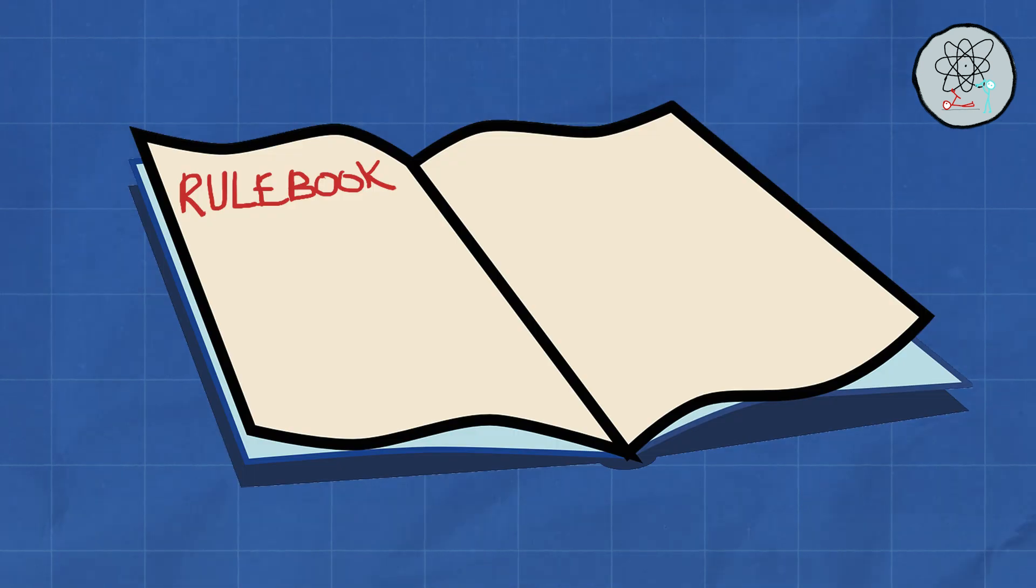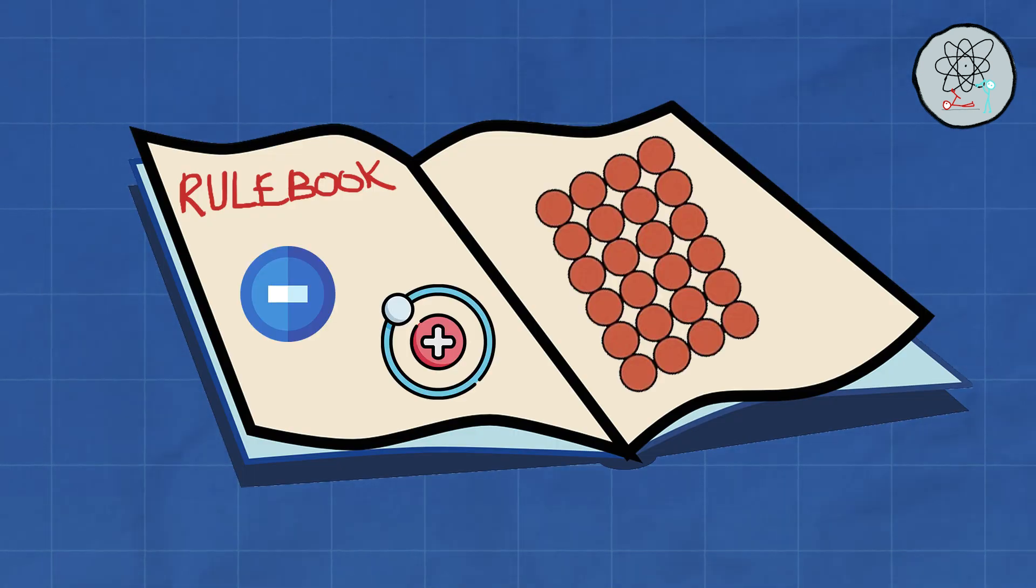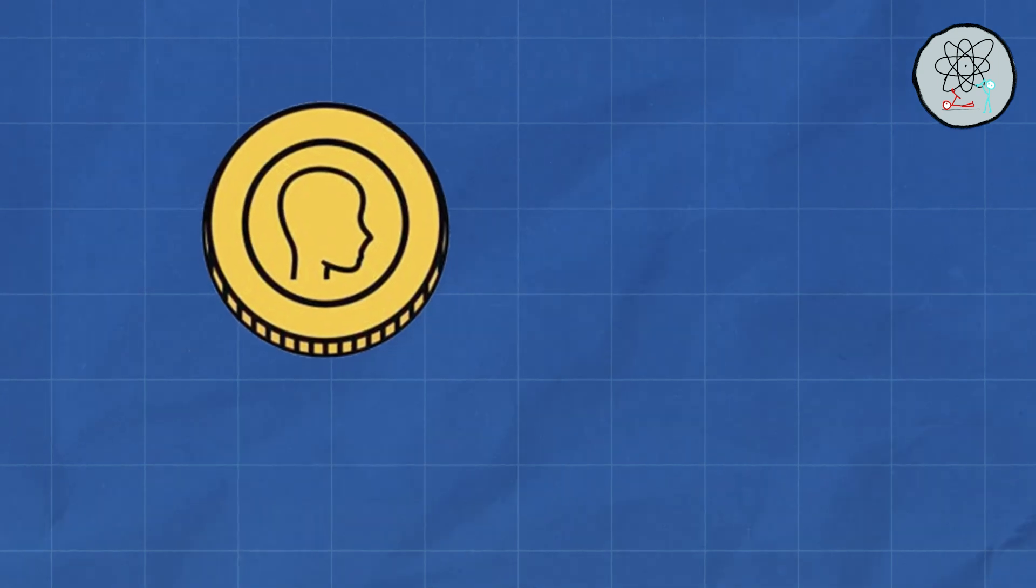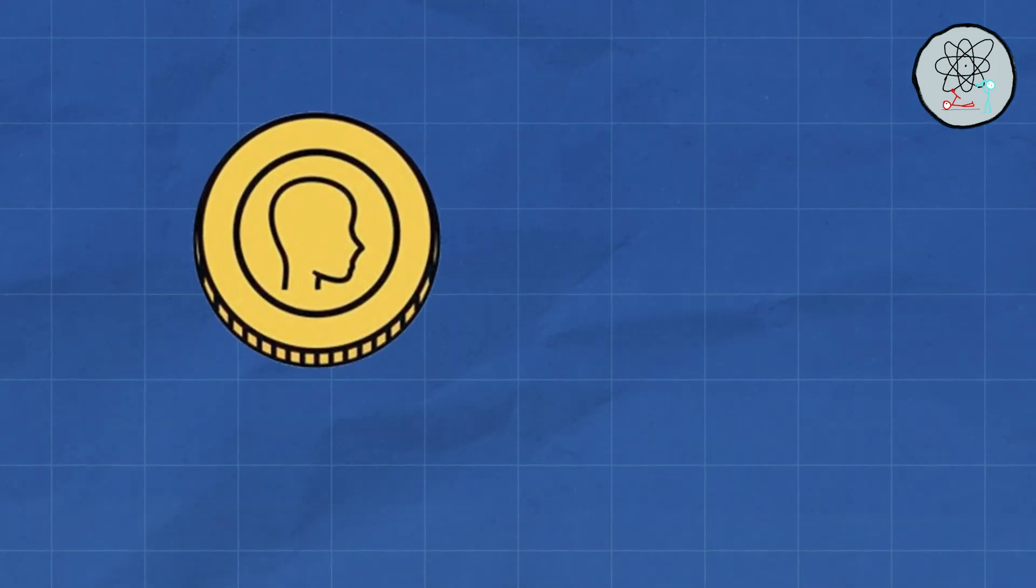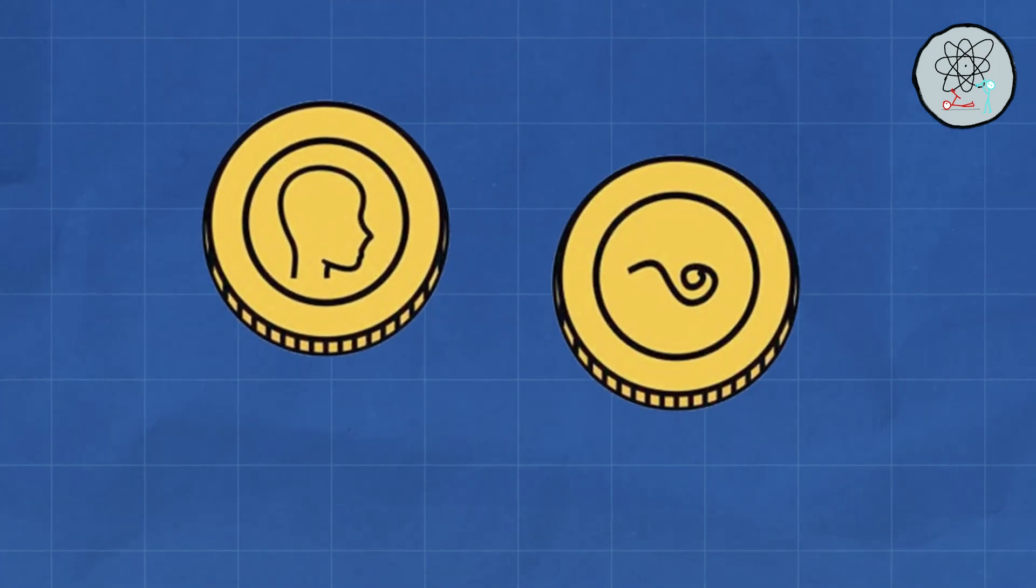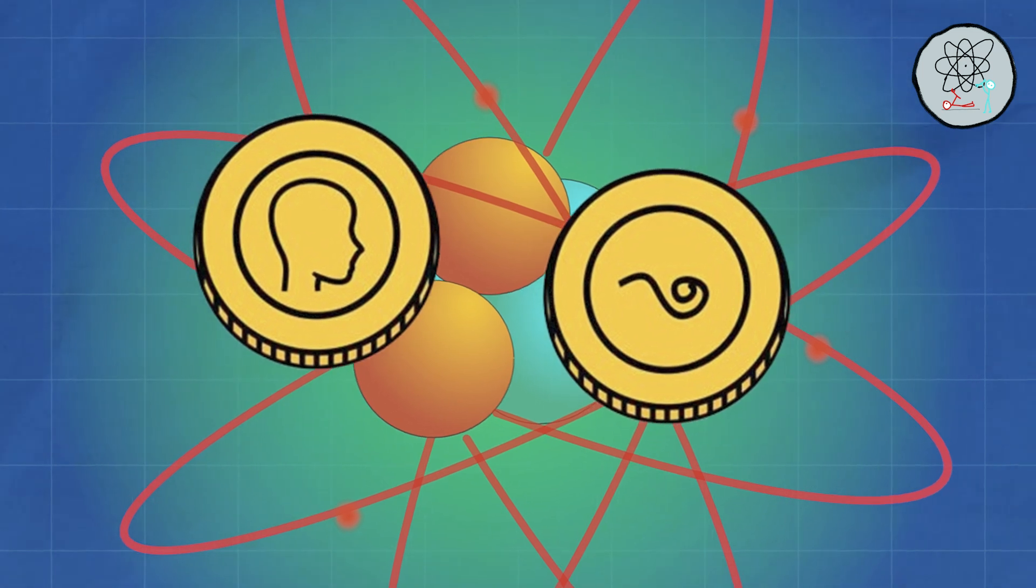It's the rulebook for the quirky realm of electrons, photons, and other minuscule particles. Imagine a coin. In our everyday world, it can be heads or tails. But in the quantum world, things aren't so clear-cut.